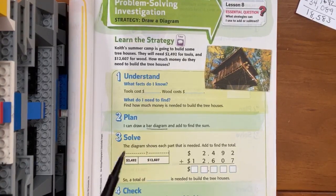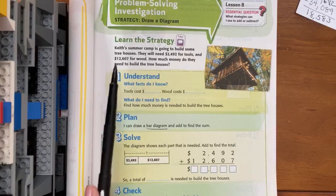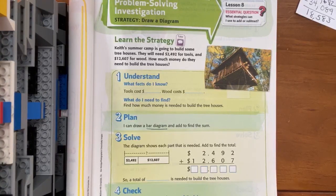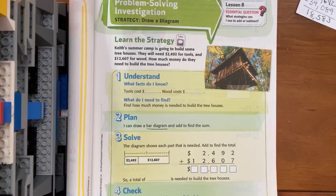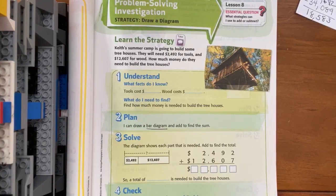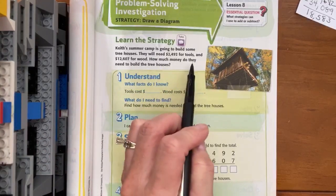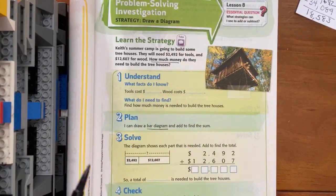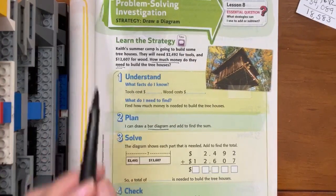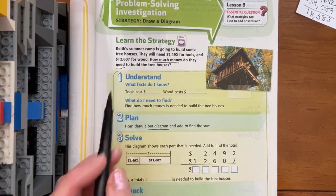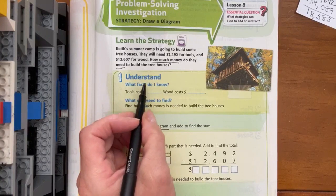Let's read our story problem. It says Keith's summer camp is going to build some tree houses. They will need $2,492 for tools and $12,607 for wood. How much money do they need to build tree houses?